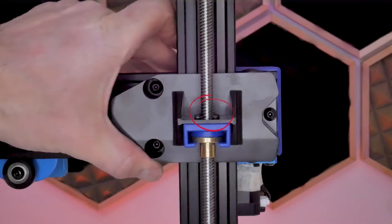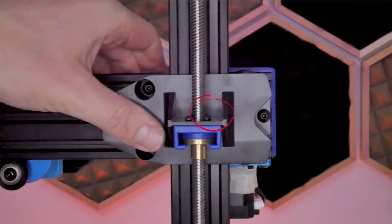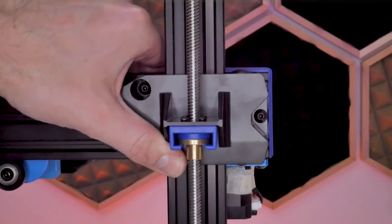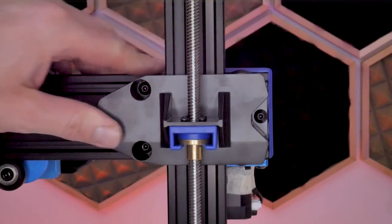The screws that I've circled here in this clip attach the black plastic to the blue plastic and have no bearing on the amount of play in the system. Trust me, I tried tightening those as well.